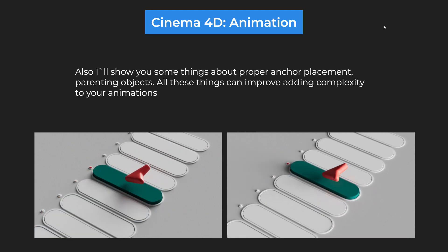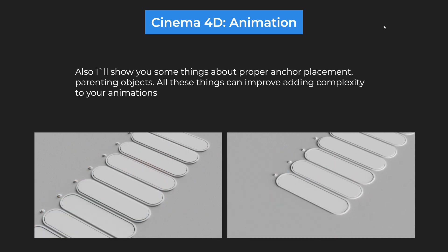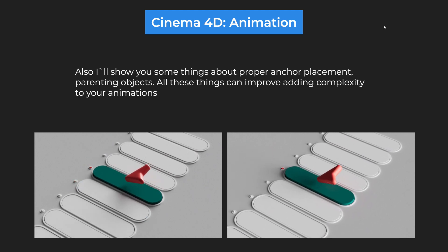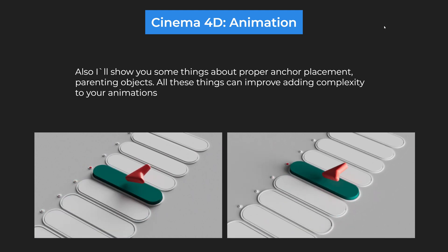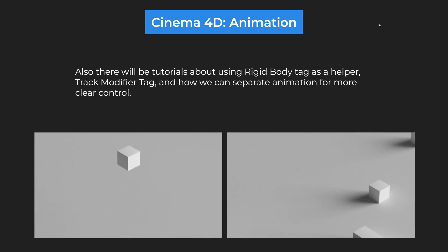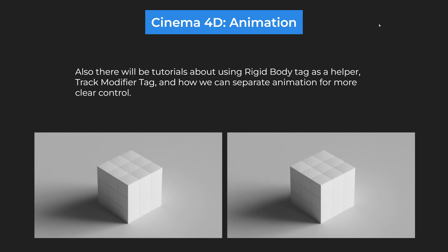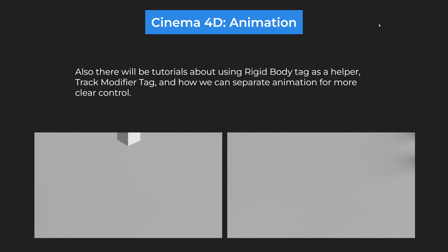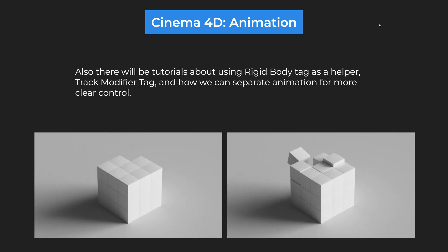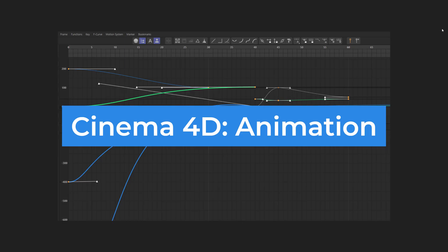We cover where we should put anchor points, how we should arrange objects in 3D space, and what and how objects could be connected to each other. Besides those things, there will be information about how we can use dynamics for animation, how we can use the drag modifier tag, and how we can separate animation into different controls for faster work and creating more complex variations of movement.